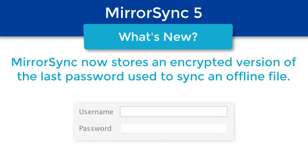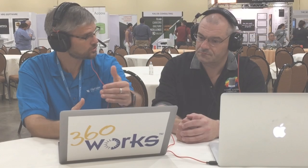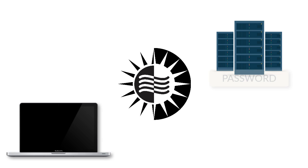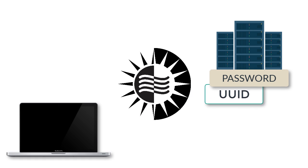In prior versions, when you would close your FileMaker file, reopen it, and run the sync, MirrorSync would prompt you for your password because it needs to run the sync as you — it needs to log in as you. With MirrorSync five, we store that password securely on the server. We send a UUID down to the FileMaker file that's permanently stored, representing that password. Now every time you run the sync, instead of sending a password, we send the UUID, and then MirrorSync can get that associated password, decrypt it, and use it to sync without having to make you reenter your password.